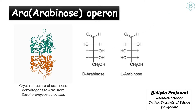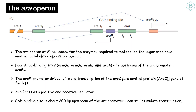Hello everyone. Today we will see how arabinose operon regulation happens in prokaryotes, especially in E. coli. The arabinose operon of E. coli codes for enzymes required to metabolize the sugar arabinose. This operon is another example of a catabolite repressible operon.